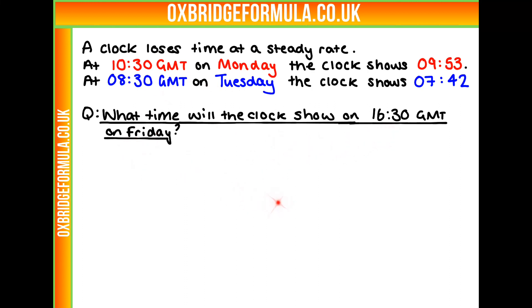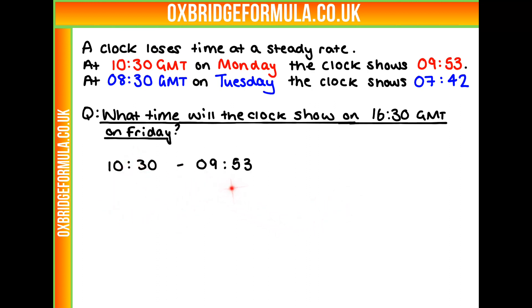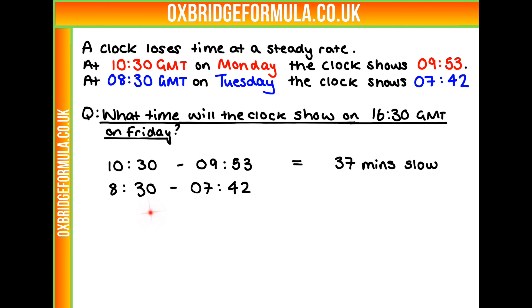Where should we start with this question? We know this clock is losing time at a steady rate, so if we find out what this rate is, we should be able to work out what the time is going to be at 4.30 on Friday. Let's compare the slowing difference between our two times and work out a rate. On Monday at 10.30, it shows 9.53 — this means it's 37 minutes slow. On Tuesday, the clock is 48 minutes slow.